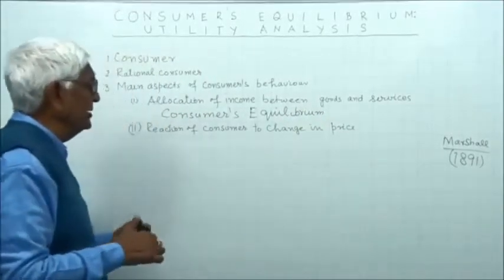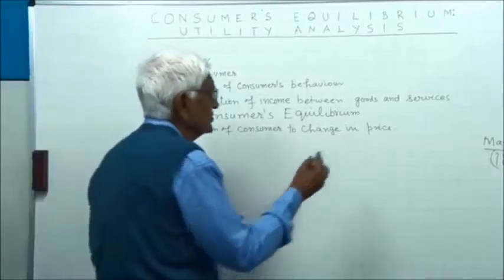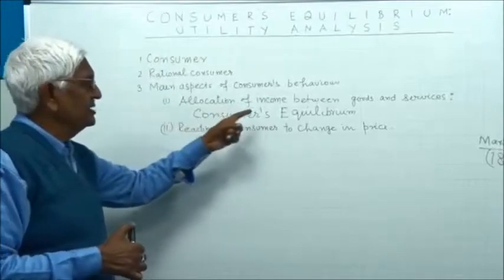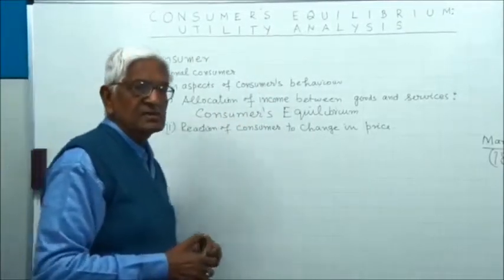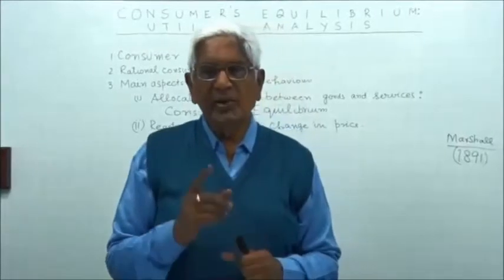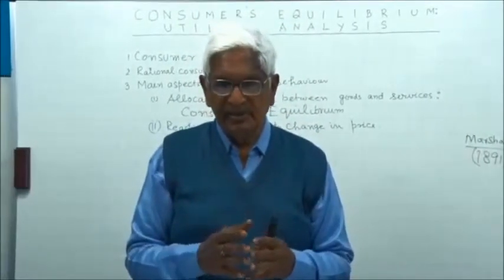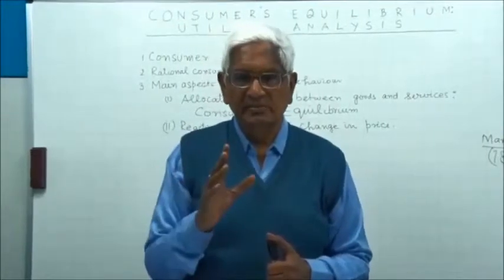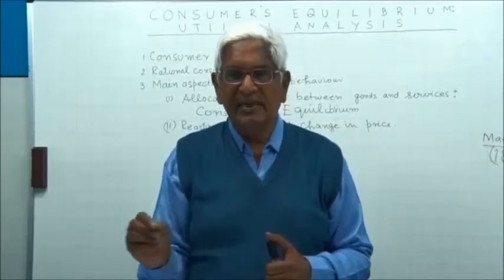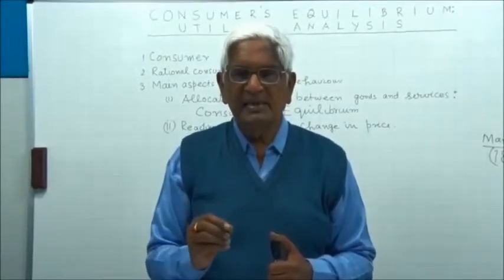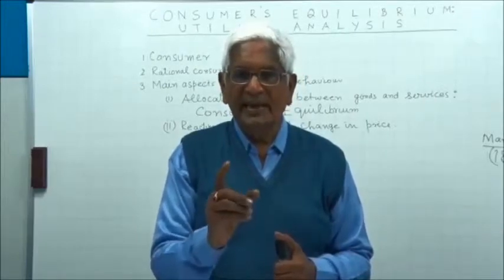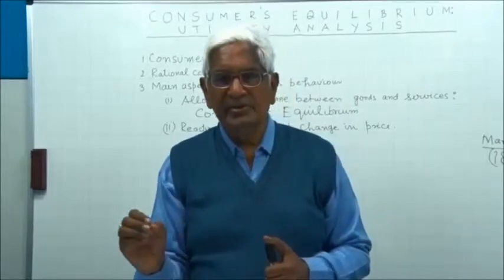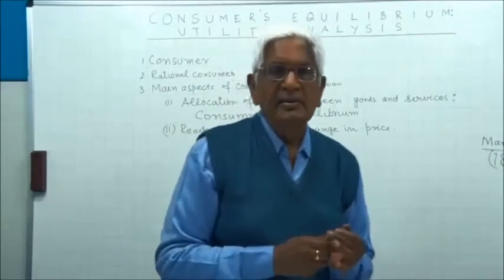We will study the meaning of equilibrium shortly. The technical aspect of allocation of income between goods and services is called consumers' equilibrium. We are going to study when consumers' equilibrium is achieved — that is, when does the consumer make a rational decision about what to buy and in what quantities.